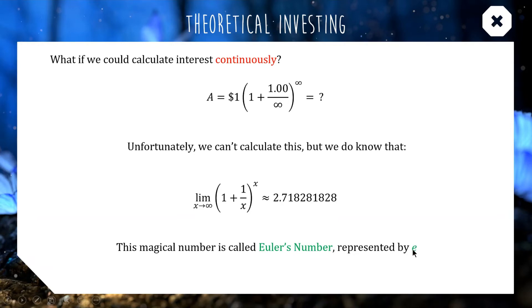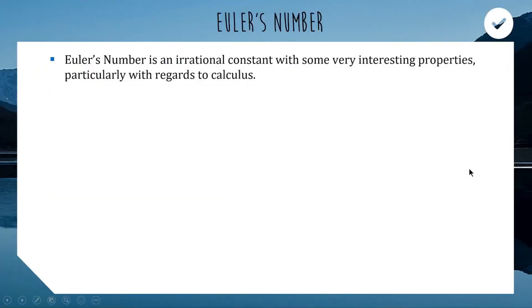So, 2.718, henceforth in this course, will be called Euler's number. And for short, we represent it by the lowercase letter E. So, in mathematics, when you see the letter E, it's referring to this mathematical constant here, which is a really important number, which we're going to look at throughout this lesson and the next lesson as well. So, in your notes, you can fill in that Euler's number is an irrational constant. It's got some really interesting properties, especially with regards to calculus, which is going to be tomorrow's lesson. We represent it by lowercase E. There's a bit of debate over why Euler chose E for his letter. It's not just because his name starts with E.